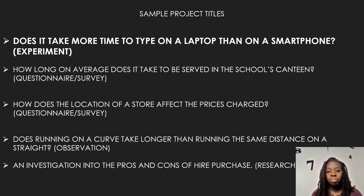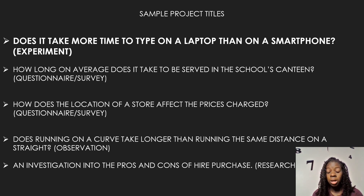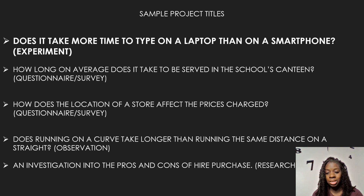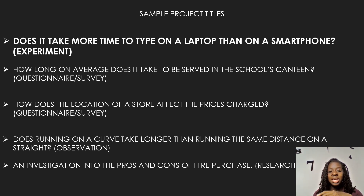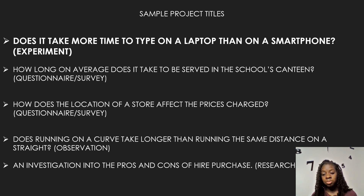Here are some sample project titles. The first one is: 'Does it take more time to type on a laptop computer than on a smartphone?' — I'll actually be doing a sample SBA on this topic, and the method used to collect data is an experiment. Another one is: 'How long on average does it take to be served in the school's canteen?' — you can use a questionnaire or a survey, but the survey will be more effective as there aren't many questions to ask.